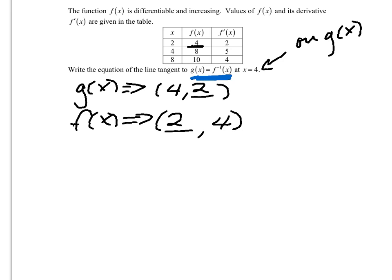And then I know that if I'm going to find g prime of 4, that's going to be 1 over f prime of 2. So that's 1 over 2.